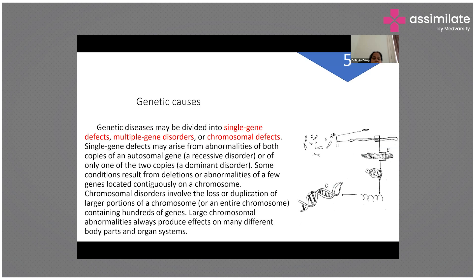Regarding genetic causes: single gene defects may arise from abnormalities of both copies of an autosomal gene — a recessive disorder — or of only one of the two copies — a dominant disorder. Some conditions result from deletions or abnormalities of a few genes on a chromosome. This is important because patients coming for preconception counseling may already know they have a defect and will ask about the chances of their child having the same condition or being incompatible with life.